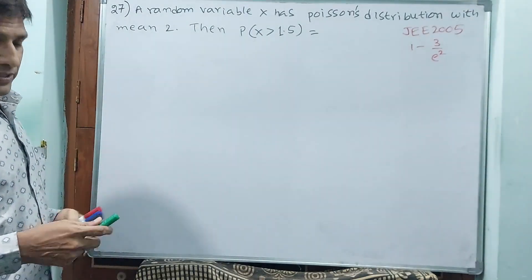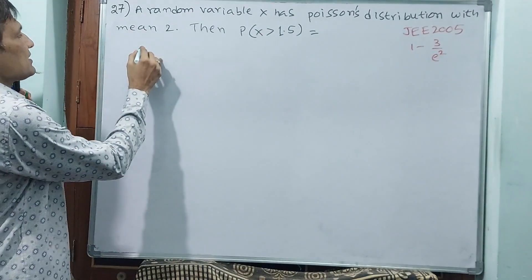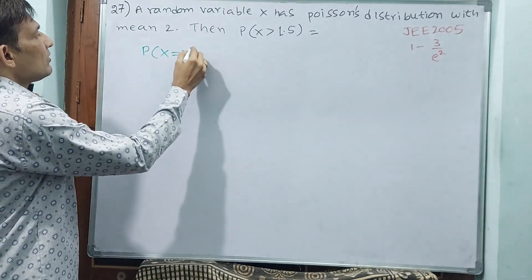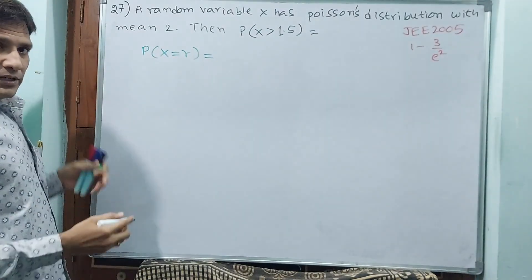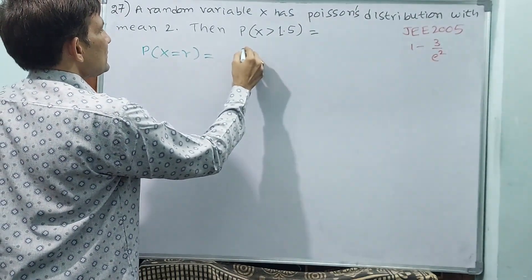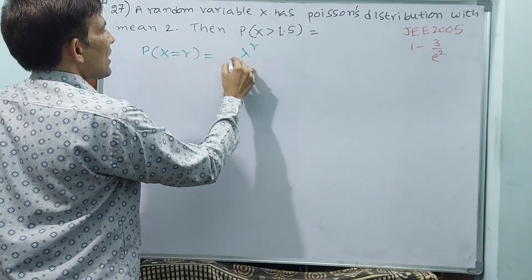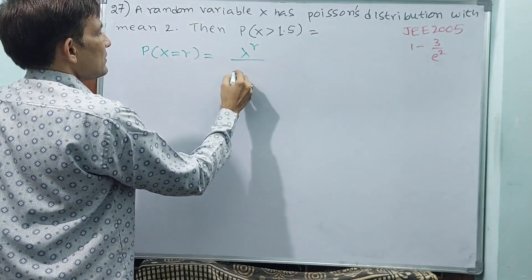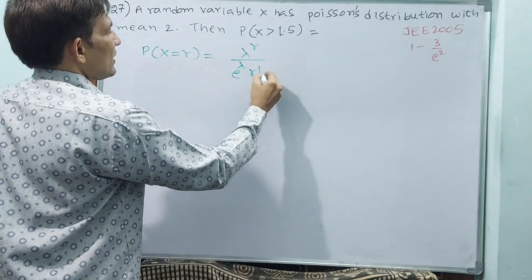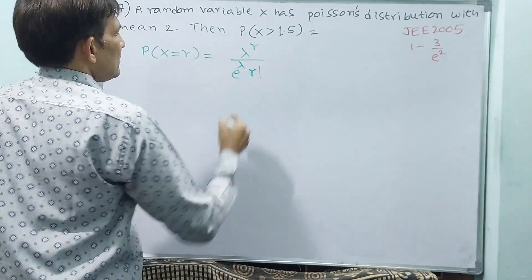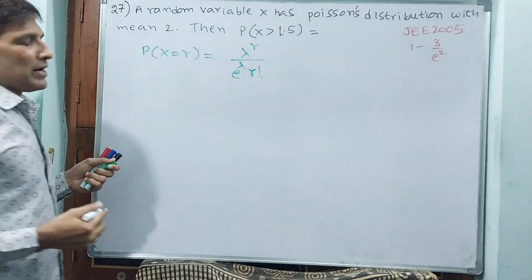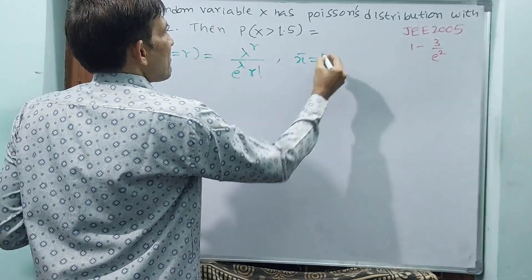Let me write the formula for this Poisson's distribution. Poisson's distribution P of x is equal to r is lambda power r by e power lambda r factorial. Wait, what is lambda? I am going to tell. Mean is equal to lambda.